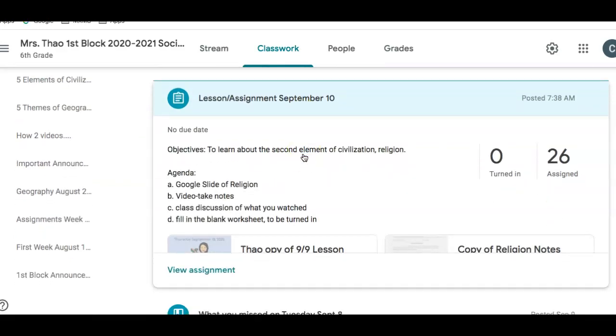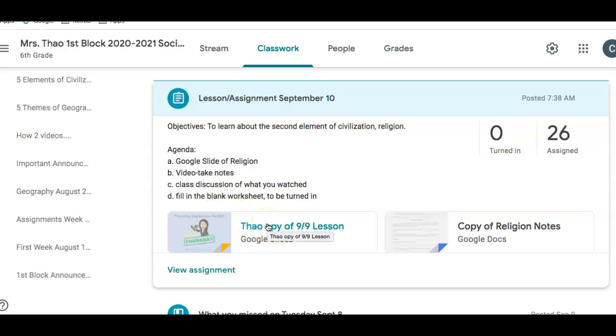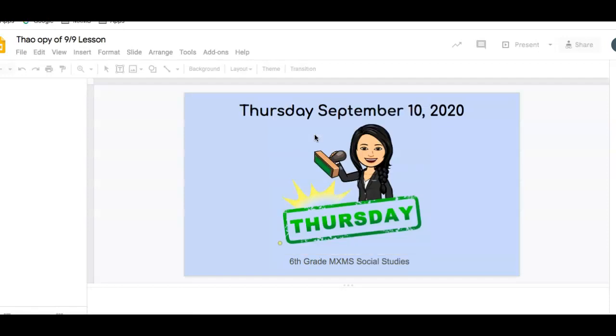Our objective today is to learn about the second element of civilization, religion. We're going to go through the Google slide of religion and then during the video take some quick notes of what you saw so that we can have a class discussion. Then I will give you guys some time to fill in the blank worksheet and make sure you turn that in.